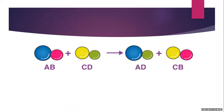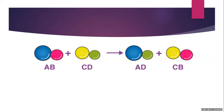With the help of colorful circles, you can understand how chemical reactions form. Suppose two elements A and B combine to form compound AB, and two elements C and D combine to form compound CD. When these two compounds react with each other, an exchange of elements takes place. B is exchanged with D, so new compounds AD and CB are formed.